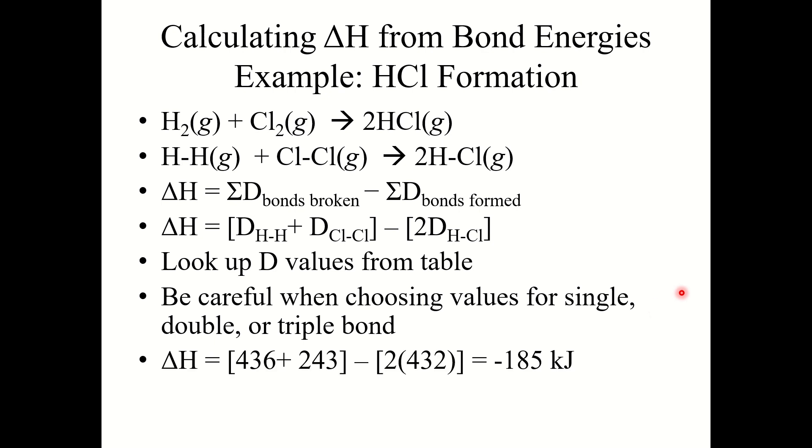The H–H bond is 436, the Cl–Cl bond is 243, and the H–Cl bond is 432. So 436 plus 243 minus 2 times 432, and this gives a delta H of negative 185 kilojoules. This reaction has an enthalpy change of negative 185 kilojoules.